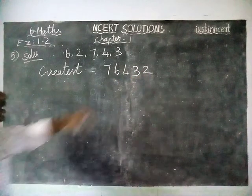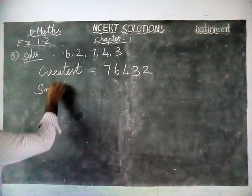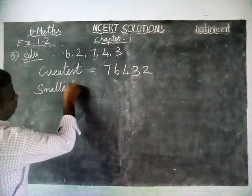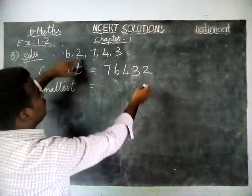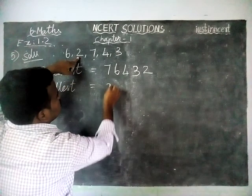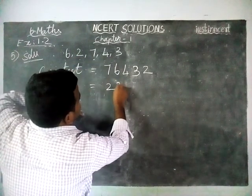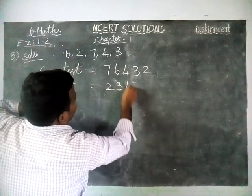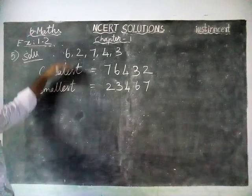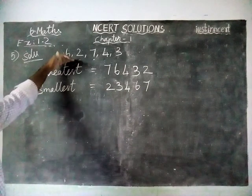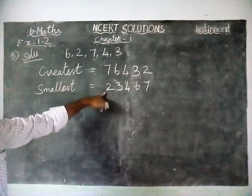For the smallest number, the smallest digit is 2, then the next smallest is 3, then 4, 6, and 7. So by using the given 5 digits, we can make the smallest 5-digit number: 23,467.